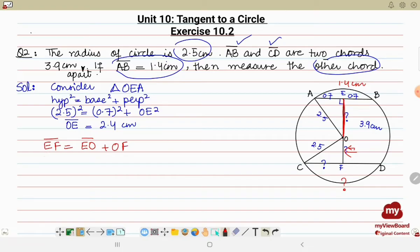So we'll just insert the values. Instead of EF we'll write 3.9 and then EO is 2.4 and then OF. So OF will be equal to 3.9 minus 2.4, which is equal to 1.5.